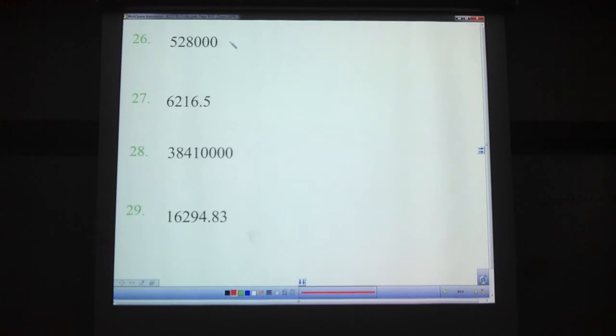And try changing these into scientific notation. Pause the video. And we're back. So this would be 5.28 times 10 to the 1, 2, 3, 4, 5th power. This one would be 6.2165. Again, you have to have just one number in front of the decimal place. Times 10 to the 3rd. 3.841 times 10 to the 7th. Then this last one here, 1.629483. Kind of a ridiculous number for scientific notation, but whatever. Times 10 to the 4th. We have to move it 4 times.